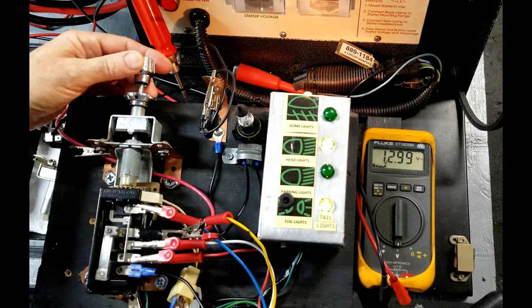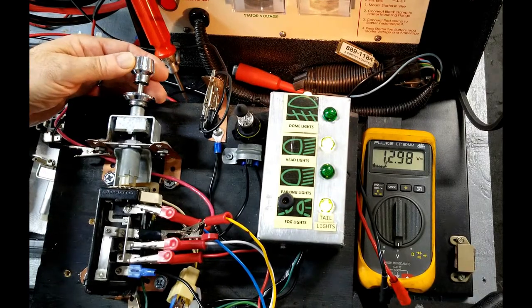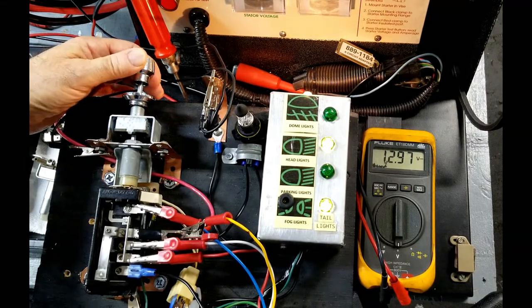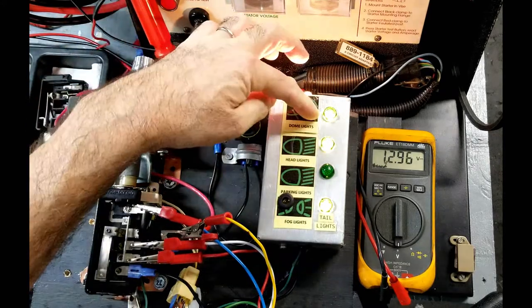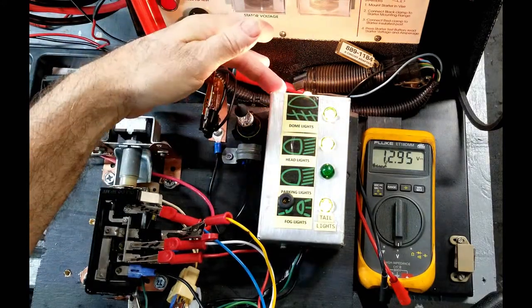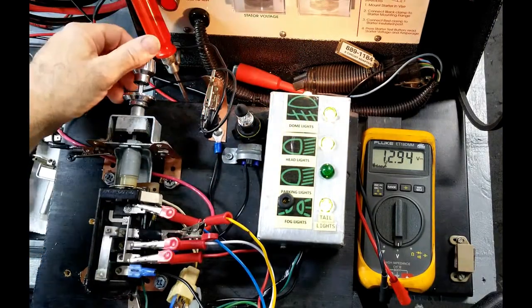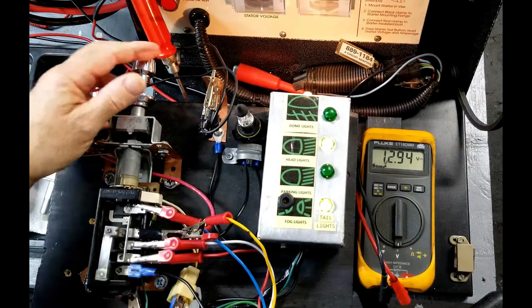Now we're going to be testing dome light, rotating the rheostat, grounding the contact, have an indication of a dome light. I'll also see dash lights are illuminated, and off.